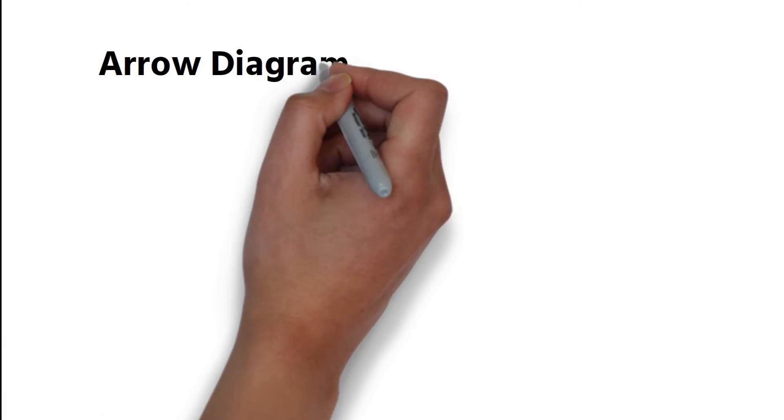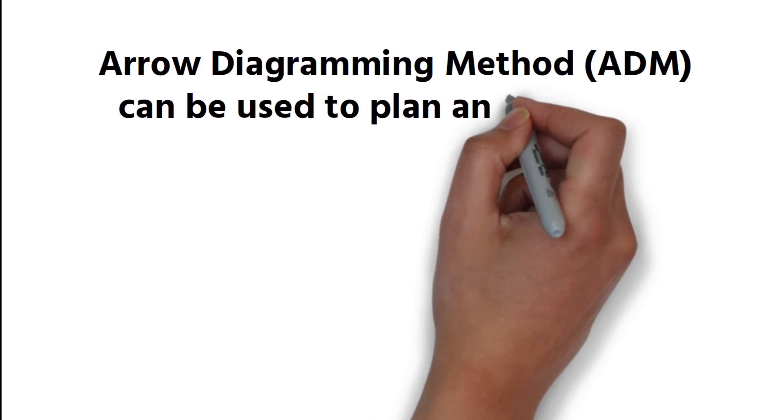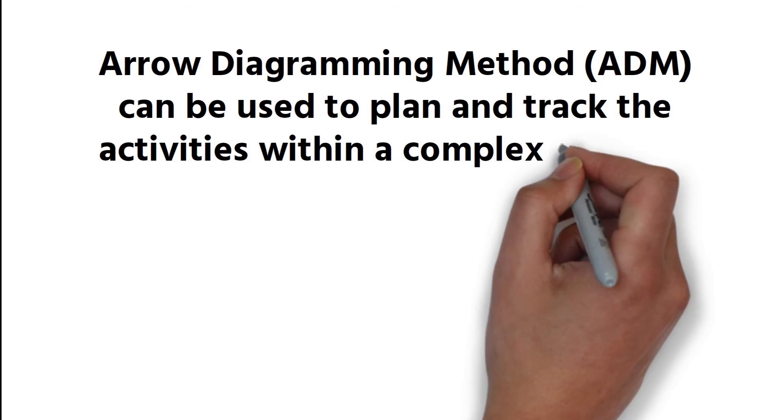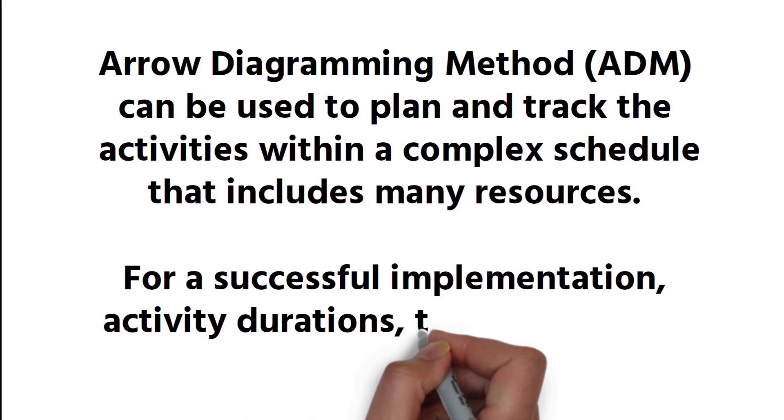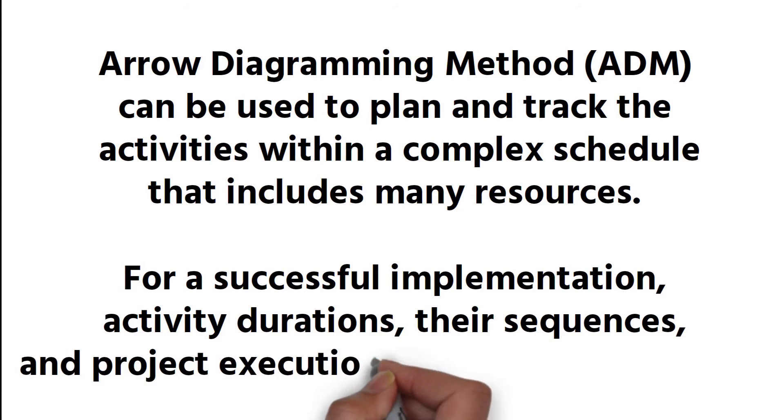Arrow diagramming method can be used to plan and track the activities within a complex schedule that includes many resources. For a successful implementation, activity durations, their sequences, and project execution strategy must be clear.